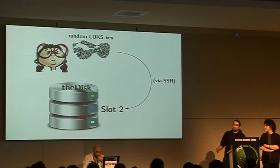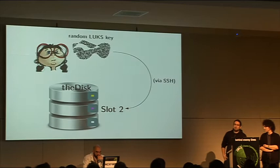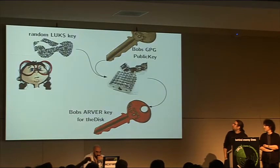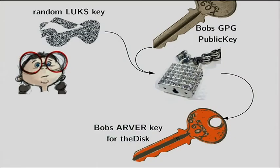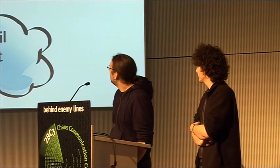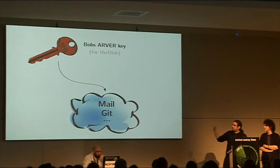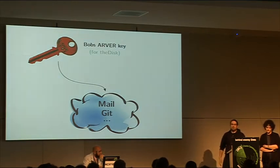Arbor will generate a random LUKS key and put that key into Bob's slot. Further, it will take the random LUKS key and encrypt it with Bob's GPG public key, and then we have an encrypted LUKS random key which we can hand over to Bob — via mail, or we can put it in a git repository, push it, and tell Bob to pull it.